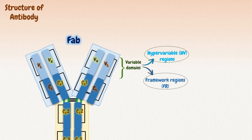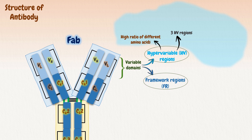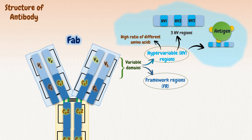The variable domain of the FAB segment is further subdivided into hypervariable (HV) regions and framework (FR) regions. Hypervariable regions have a high ratio of different amino acids at a given position relative to the most common amino acid in that position. Within light and heavy chains, three hypervariable regions exist: HV1, HV2, and HV3. The HV regions directly contact a portion of the antigen's surface, and since the antigen-binding site is complementary in shape to the antigenic epitope, HV regions are also referred to as complementarity-determining regions, or CDRs.